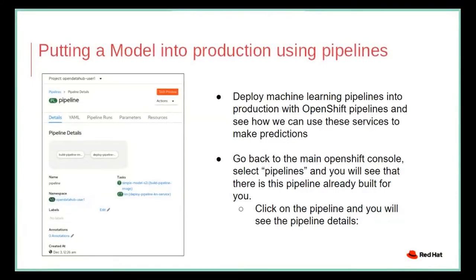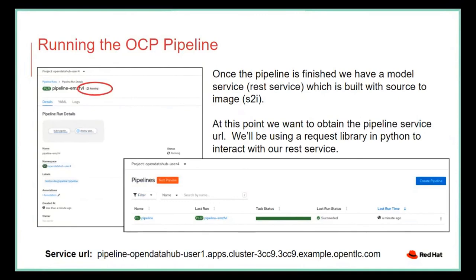When we put the model into production, we go back to the OpenShift side and use pipelines. We're deploying machine learning pipelines into production with OpenShift Pipelines. In the main OpenShift console under Pipelines, we can see a pipeline we've already created, click on it to see the pipeline details, and confirm it will help deliver our model. Once the pipeline is finished, we have a model or REST service built with Source-to-Image (S2I). We then take the pipeline service URL — for example, pipeline, operator, data hub, user one — and will use Python's requests library to interact with the REST service.